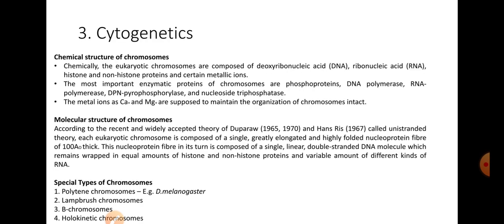Under cytogenetics, we will discuss two concepts: chemical structure and molecular structure of chromosomes. Chemically, eukaryotic chromosomes are composed of DNA, RNA, histone and non-histone proteins, and certain metallic ions. The most important enzymatic proteins in chromosomes are phosphoprotein, DNA polymerase, RNA polymerase, DPN pyrophosphorylase, and nucleotide triphosphatase. Metal ions such as calcium and magnesium are supposed to maintain the organization of chromosomes intact.